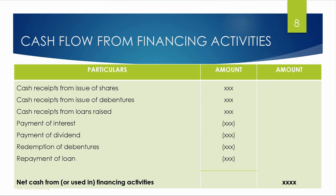Cash receipt from loans — if you receive receipts, they will be positive. Payment of interest, payment of dividend, debentures, and repayment of loan — if you make payments, they will be negative. Repayment of shares is also negative. The net effect gives net cash from financing activities, which can be positive or negative — cash flow from or used in financing activities.